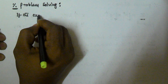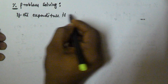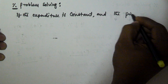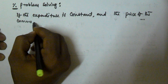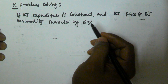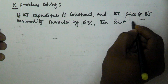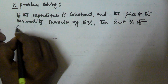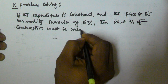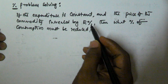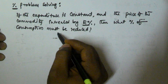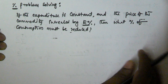For example, if the expenditure is constant and the price of the commodity is increased by R percentage, then what percentage of consumption must be reduced to keep expenditure constant?